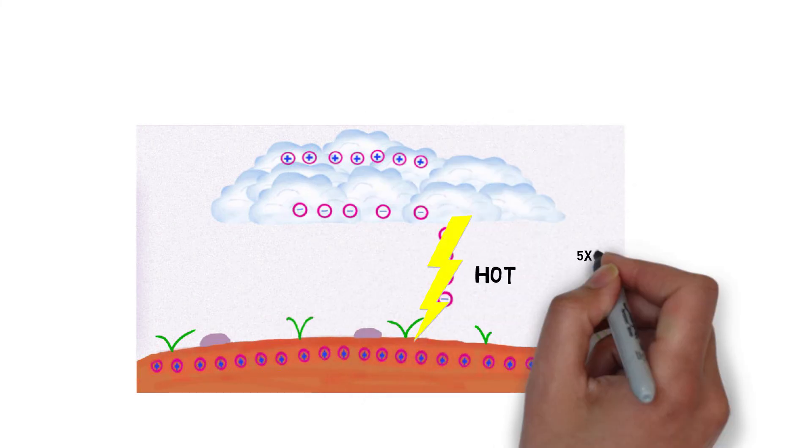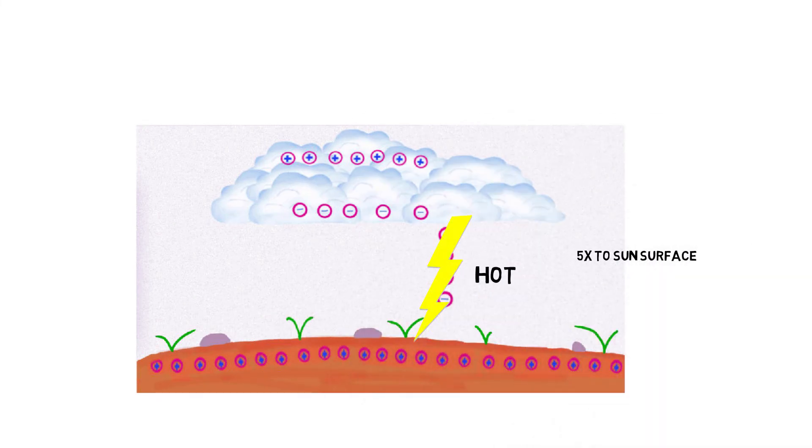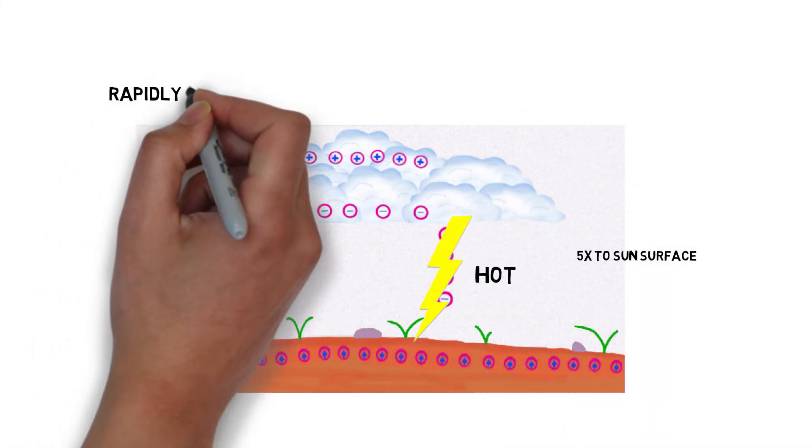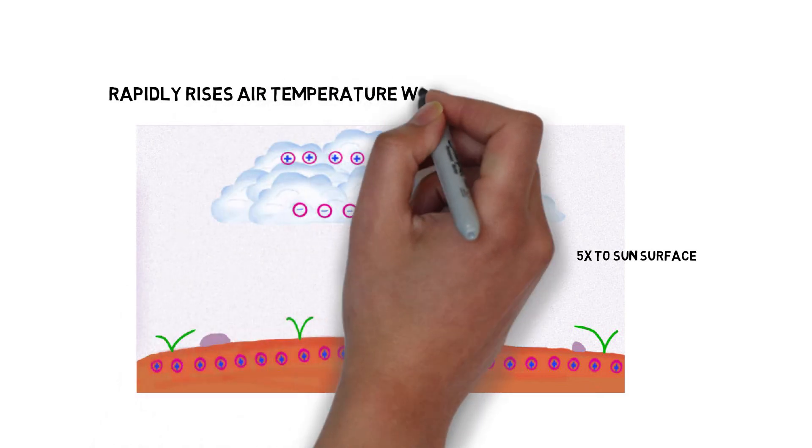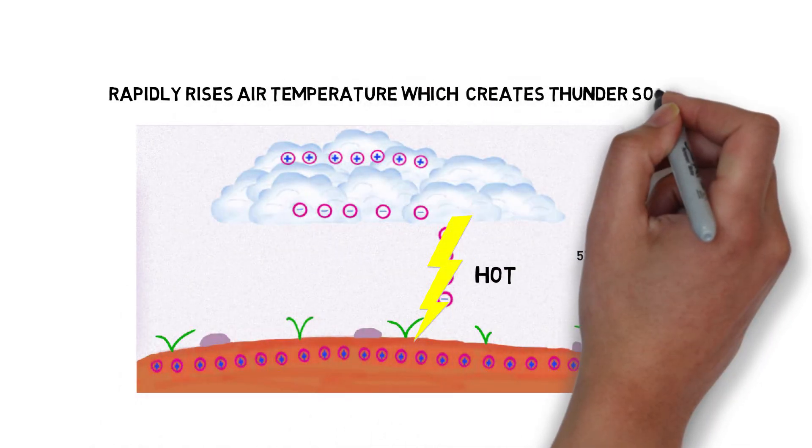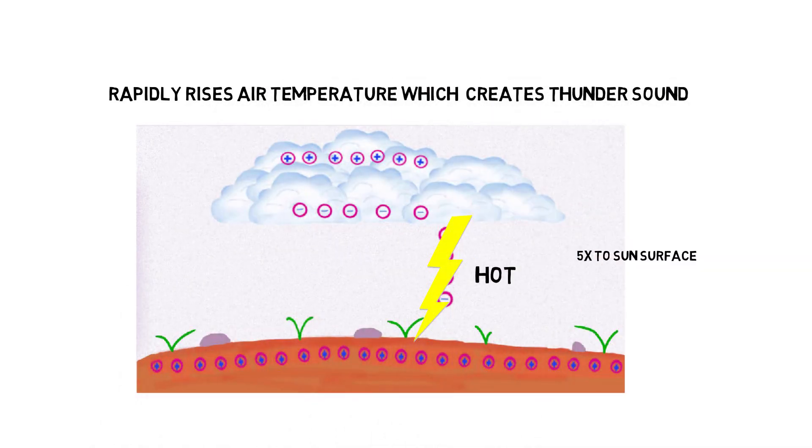Lightning is very hot and can heat the air to five times the sun's surface temperature. This heat vibrates and expands the air rapidly, creating the peeling thunder we hear shortly after we see the lightning flash.